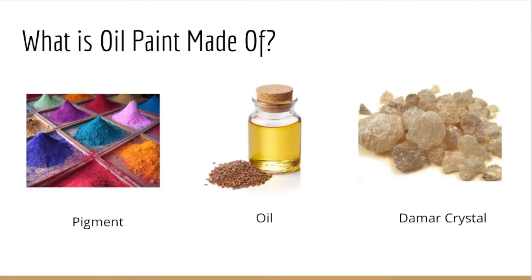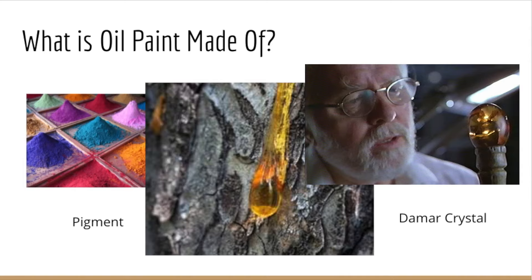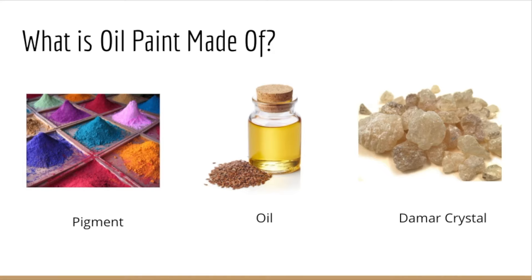Oil paint is made of pigment, oil, and damar crystals. Pigment is made of a variety of substances like metals and precious stones, and the history of pigment dates back to before the classical and medieval periods. Oil is extracted from trees and plants such as linseed, walnut, and poppy. Damar crystals are made from tree sap and give a sticky property to paint — it's what makes the paint stick together and to the surface when dried, and also speeds up the drying time.